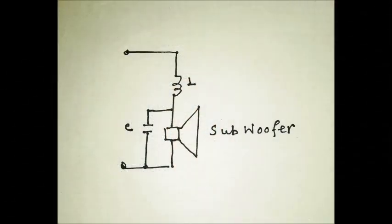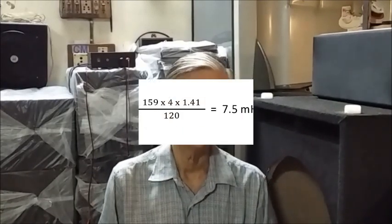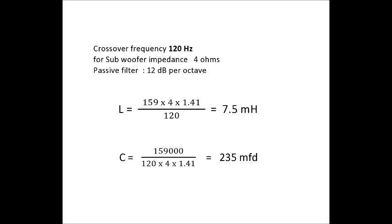We can also use the same crossover diagram to make a passive filter for a subwoofer. For that purpose, we shall take the low frequency section only. For the subwoofer filter, let us consider the crossover point at 120 Hertz and the speaker impedance of 4 ohms. From the same equation shown earlier, we get L equal to 7.5 milliHenry and the capacitor C equal to 235 microFarad.